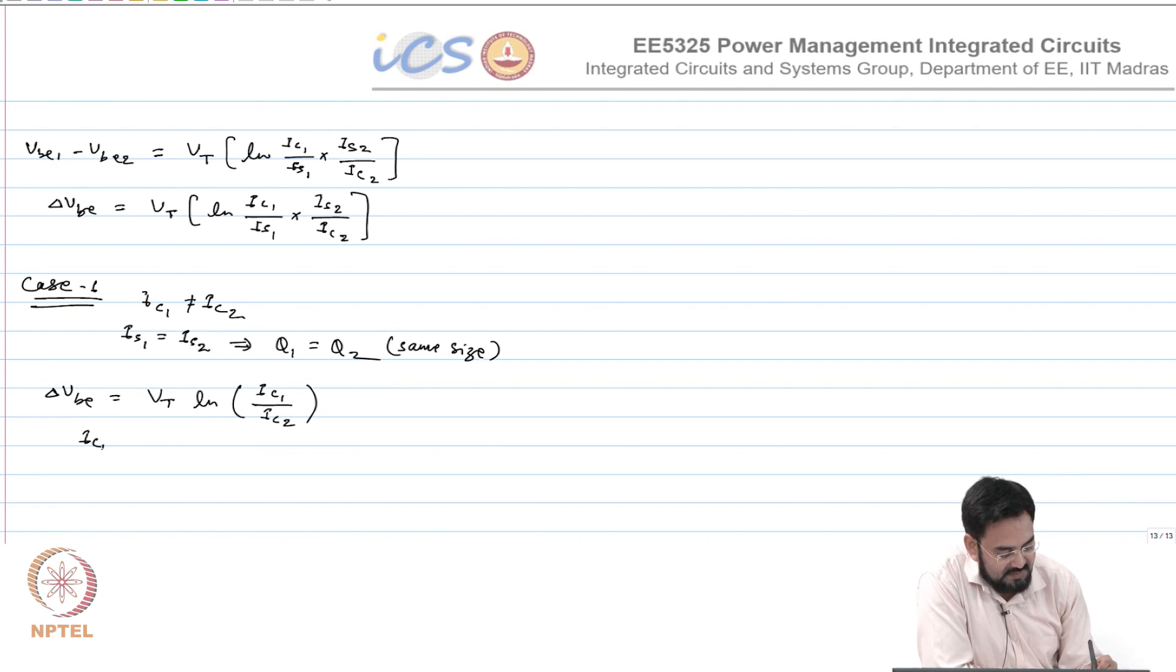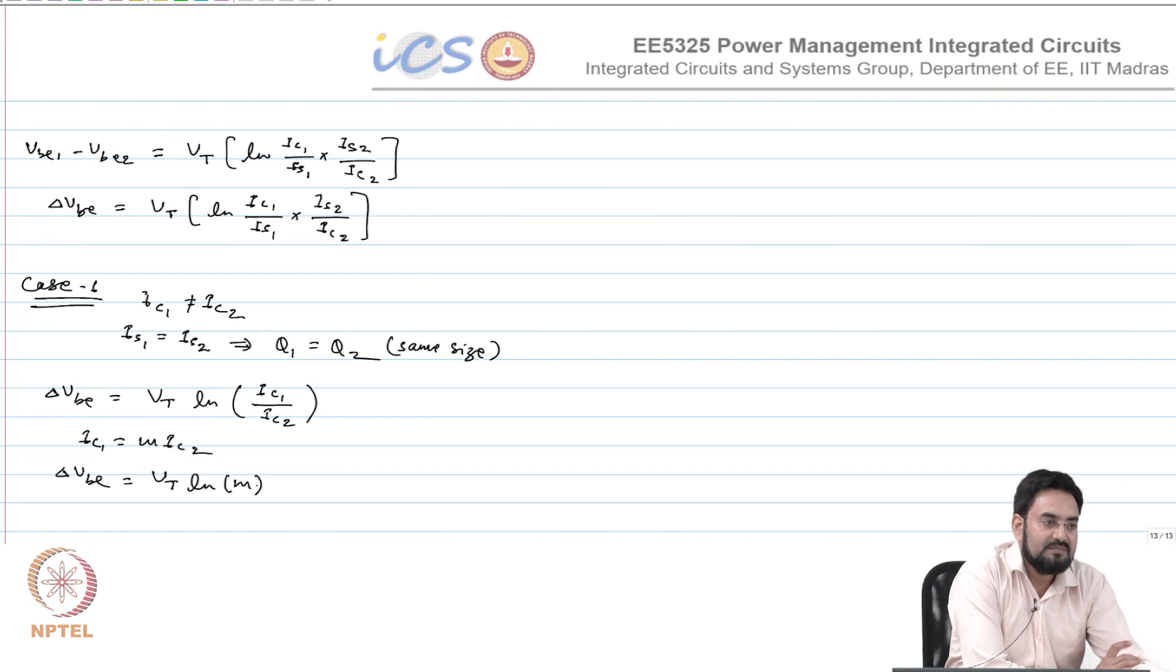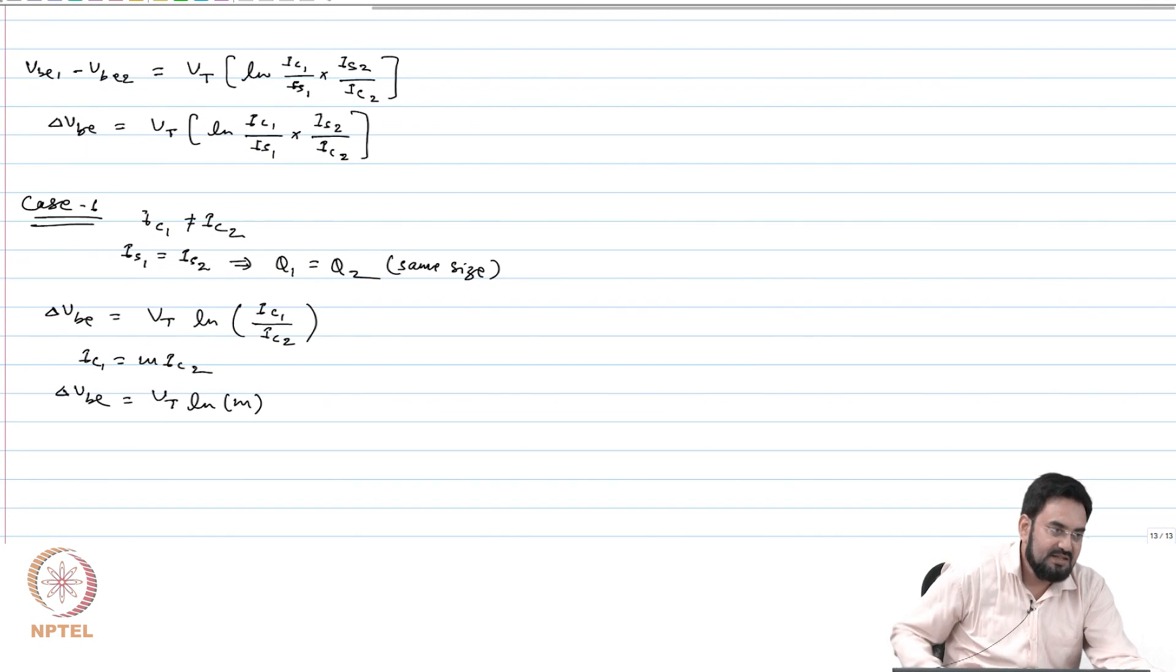Now let us say IC1 equal to M times IC2, then delta VB will be VT ln M. Now M is constant, VT is proportional to temperature.